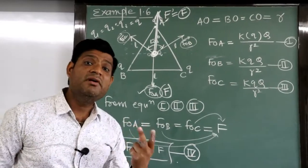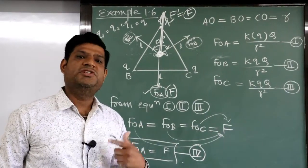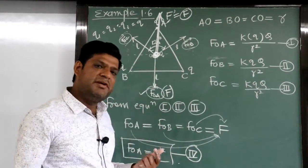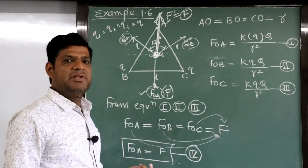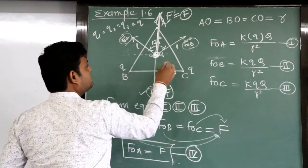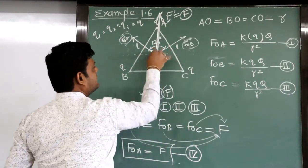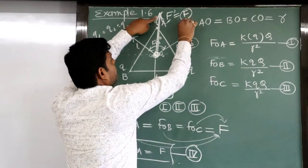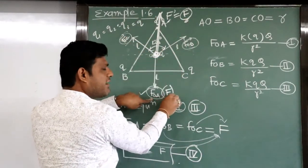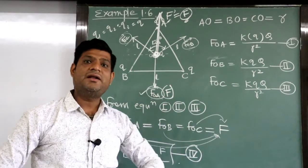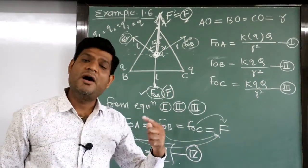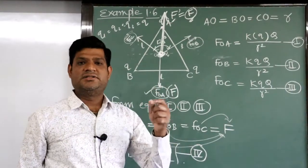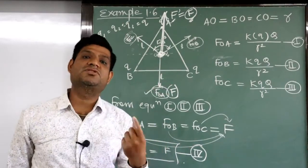These two forces are equal in magnitude and opposite in direction — one is F acting upward and one is F acting downward — because all distances from center to vertices are the same. Therefore, the net resultant force at the center becomes zero.